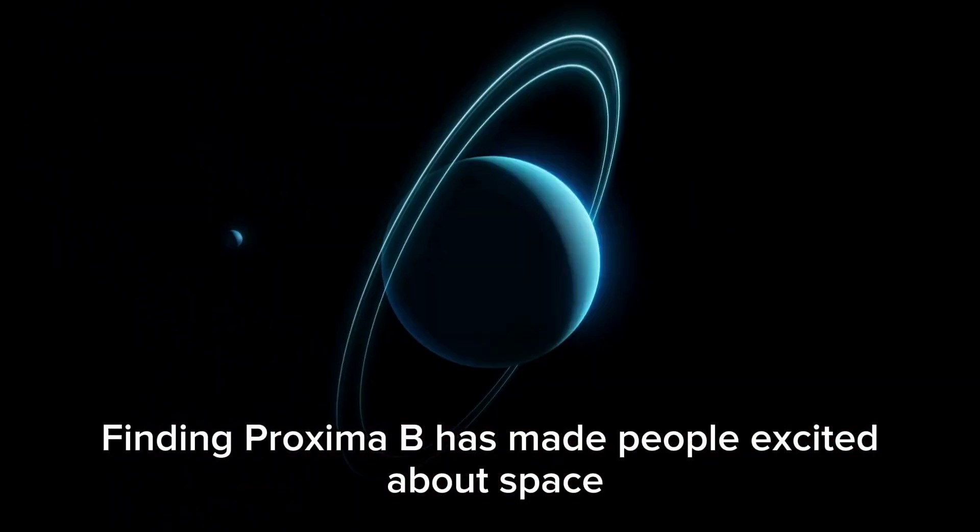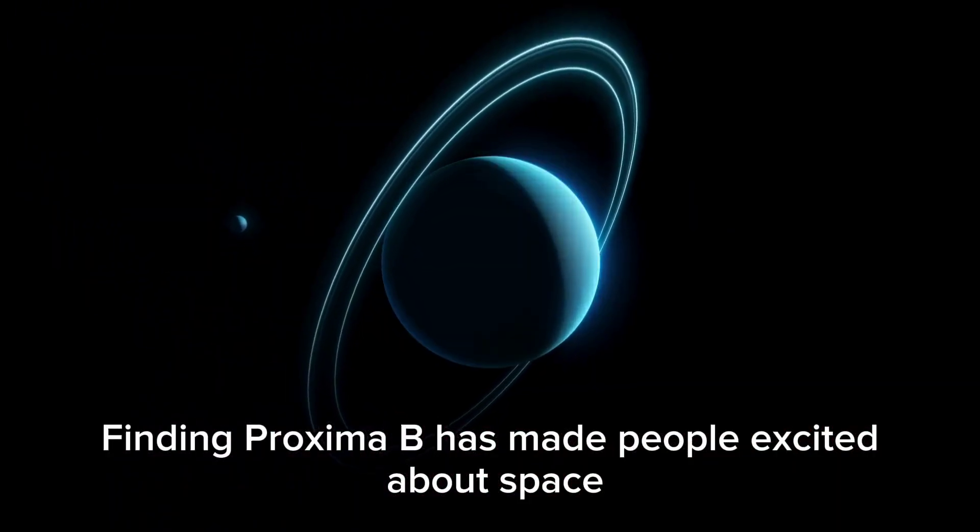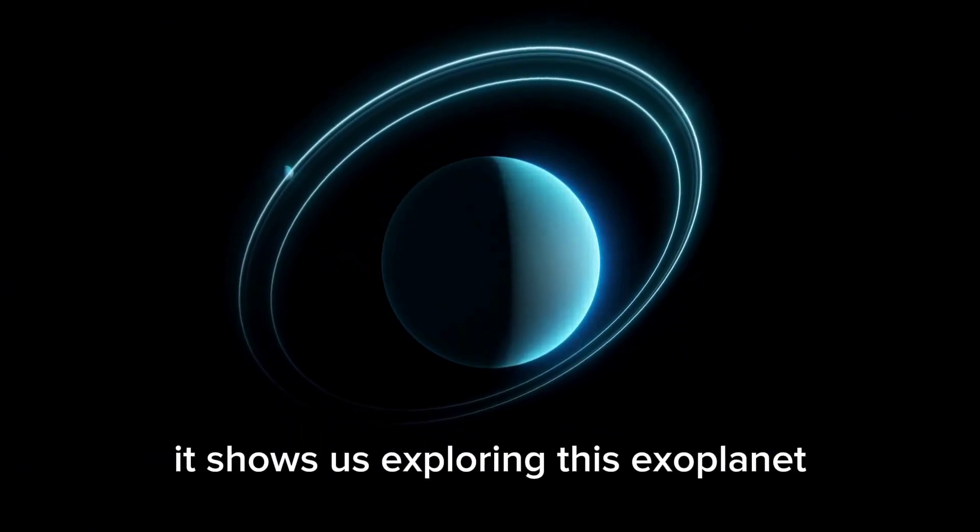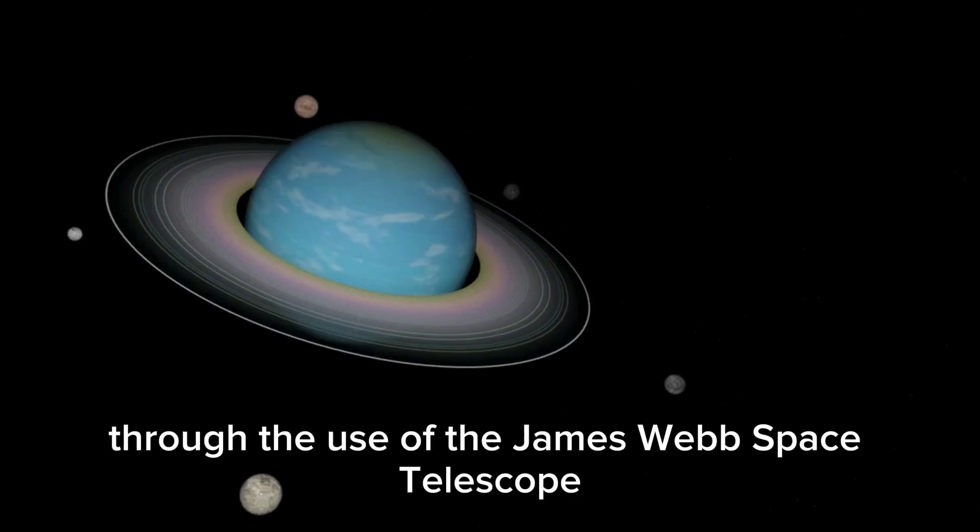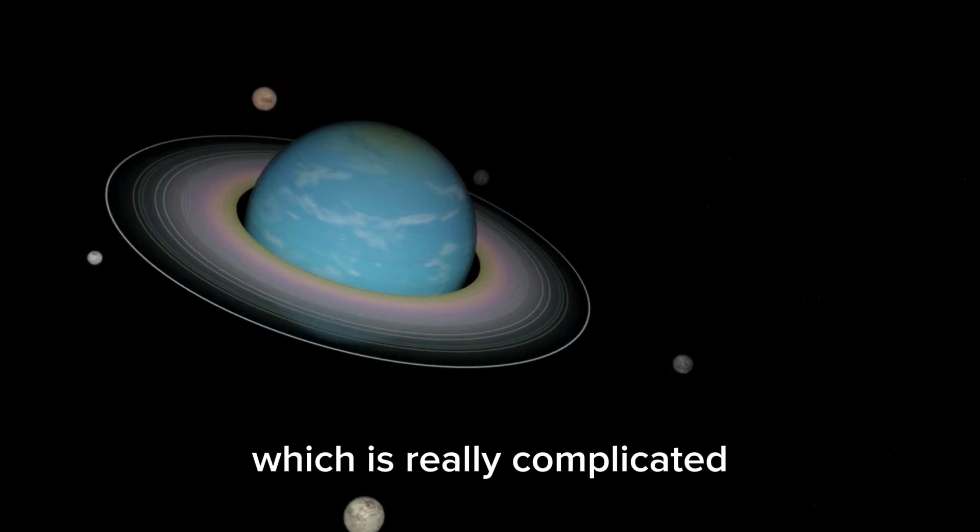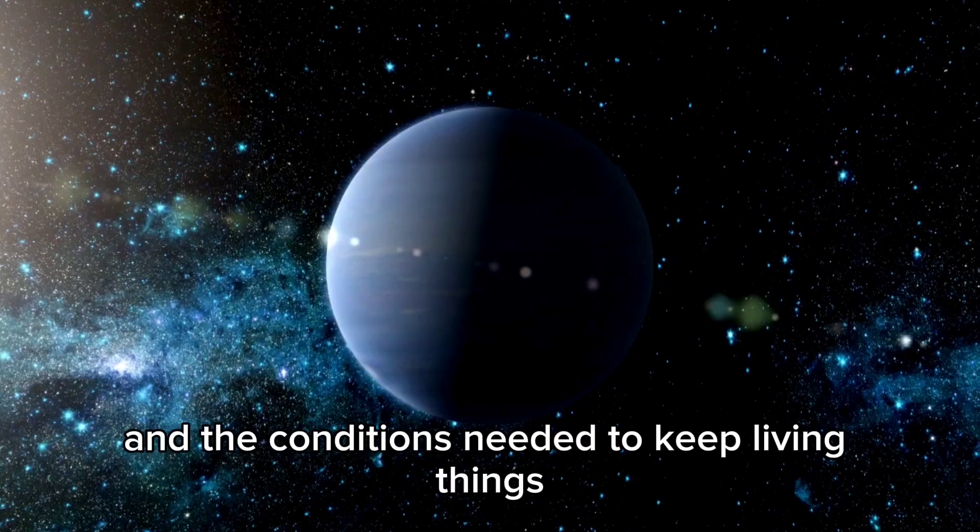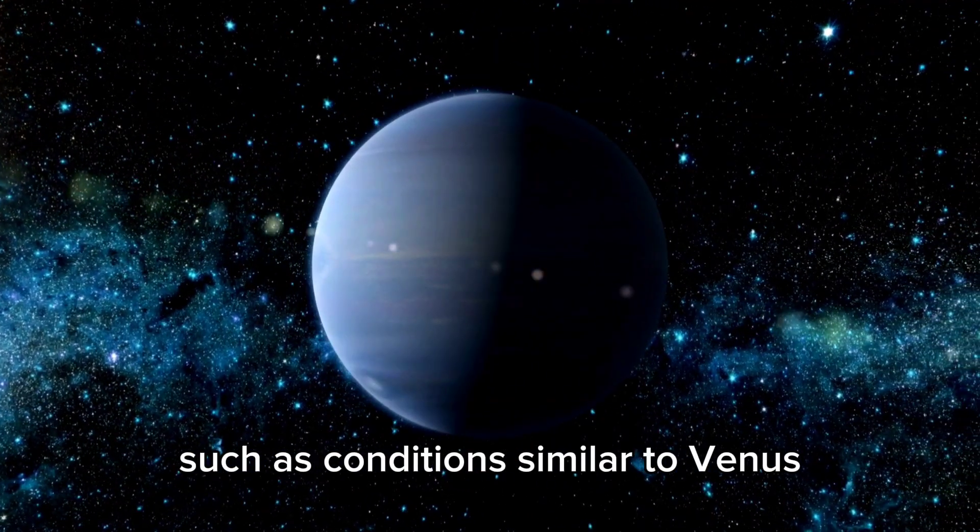Finding Proxima b has made people excited about space again. It means we want to keep exploring and finding new worlds. It shows us exploring this exoplanet through the use of the James Webb Space Telescope, which is really complicated, but has limits on working out the content of atmospheres and the conditions needed to keep living things, such as conditions similar to Venus.